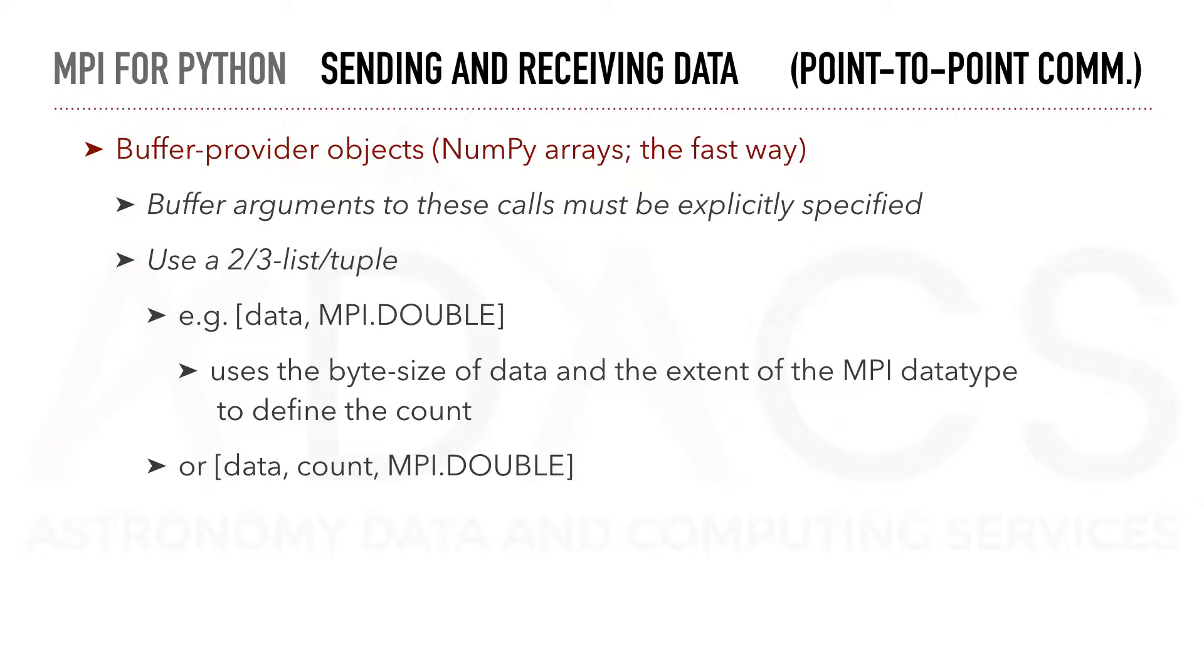For buffer provider objects, buffer arguments must be explicitly specified. This is done using a list of length 2 or more. For instance, a list with the data and the MPI type. In this case, the function will use the byte size of the data and the extent of the MPI data type to define the count. Otherwise, the count can be specified explicitly.